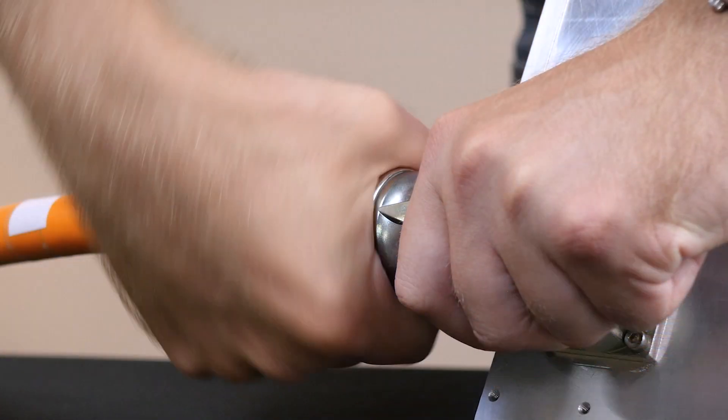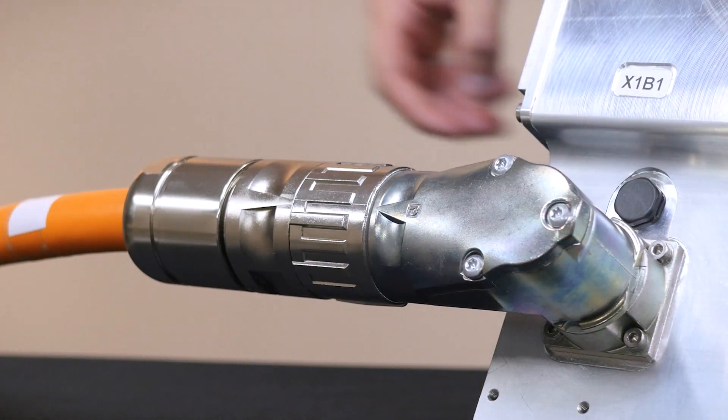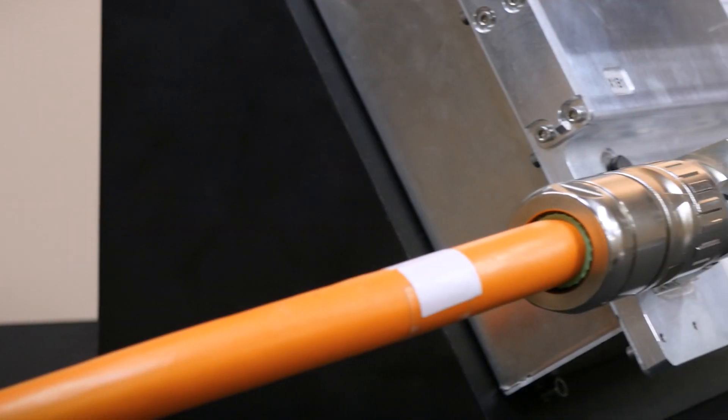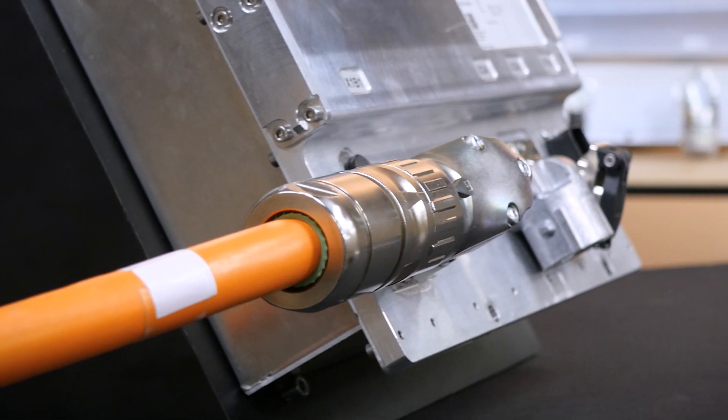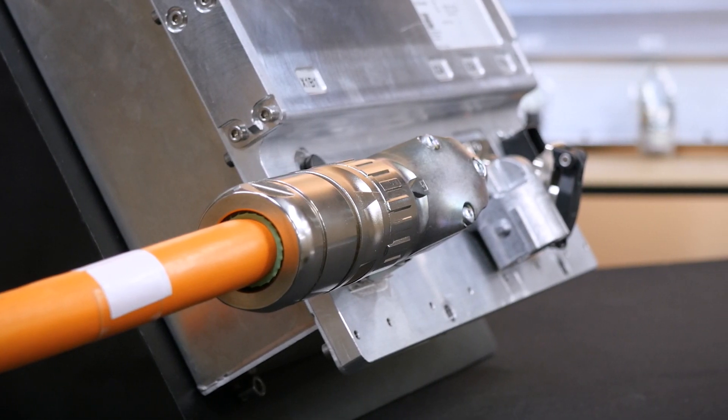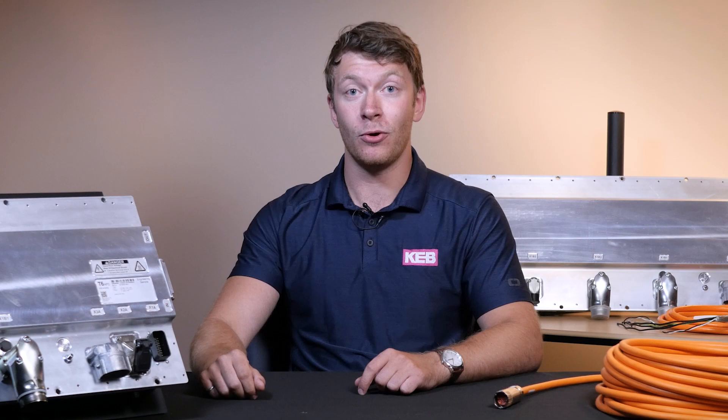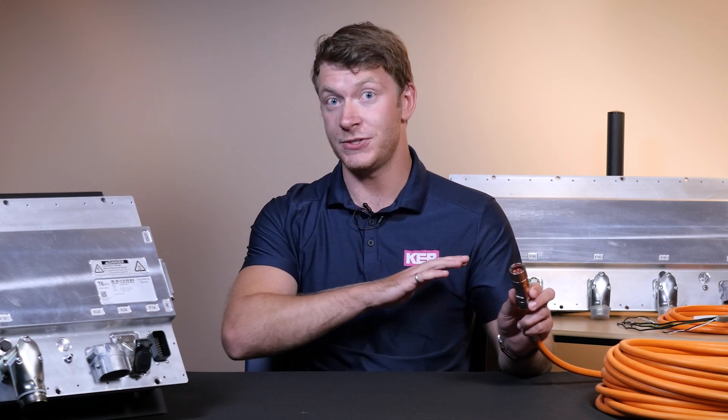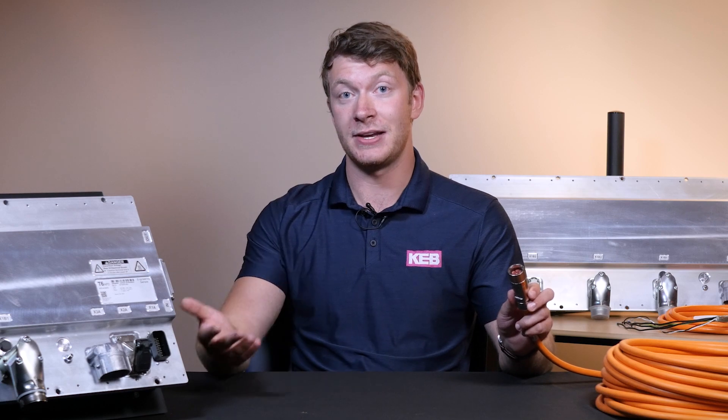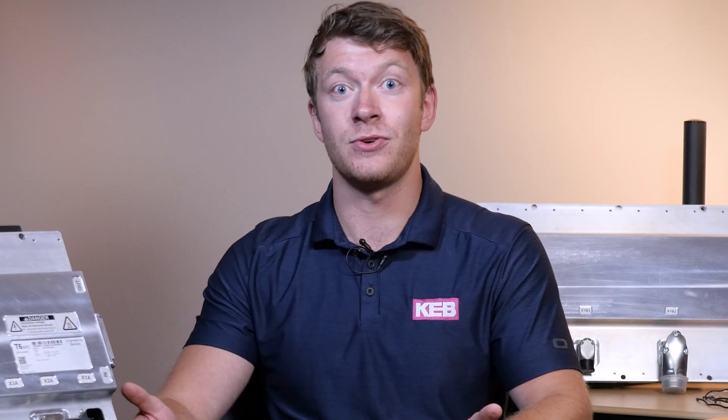The T6 also features shielded cables and connectors. These connectors prevent radiative emissions from being transmitted from the inverter to other devices as well as preventing other devices from causing adverse effects to the inverter. Importantly, the T6's shielded connectors ensure that the entire system is shielded. Without these connectors, the shielding would only be as strong as the weakest link.